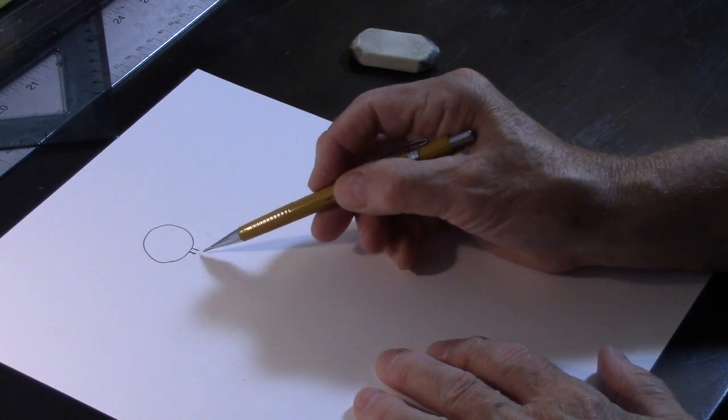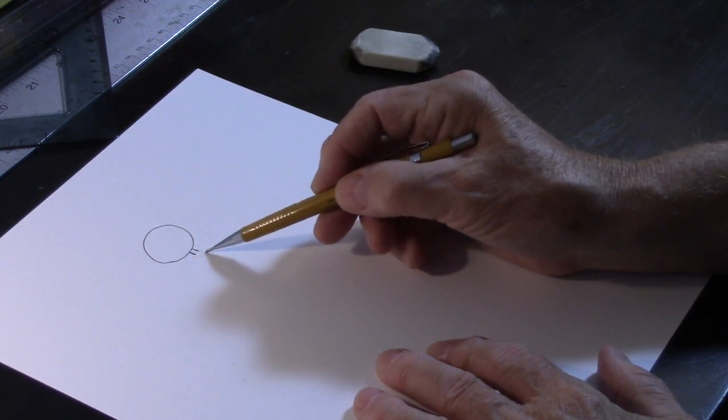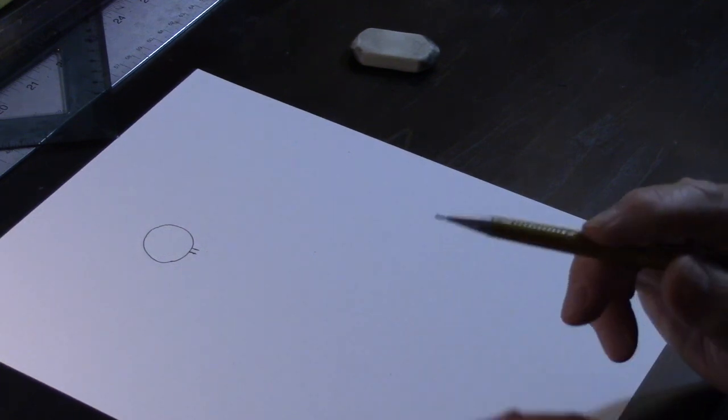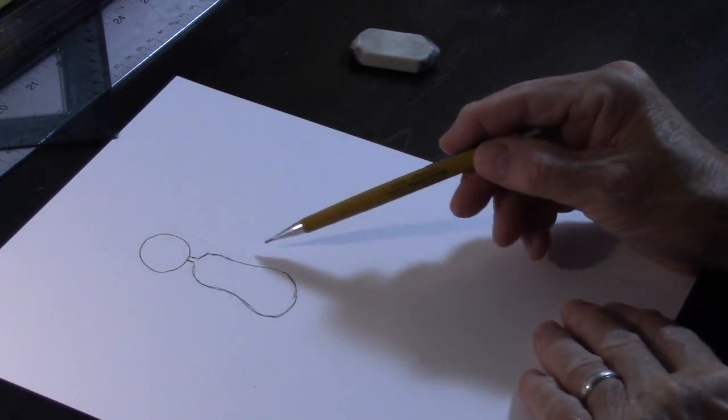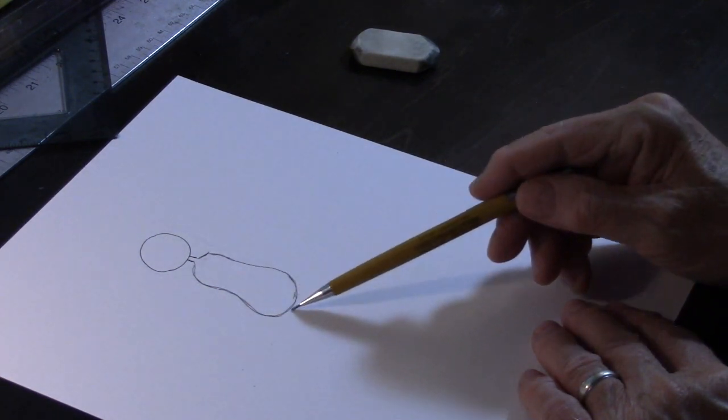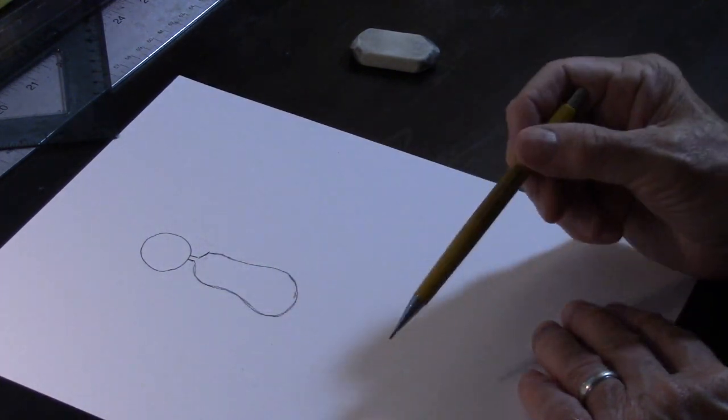Next, we're going to put his neck in, so a couple simple lines right there for the neck. Now for his body, we're going to draw kind of a kidney shape, right here. So simply draw that in,